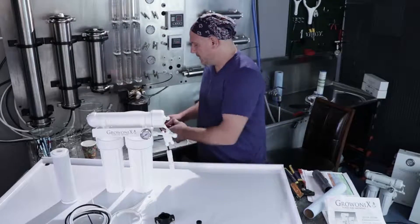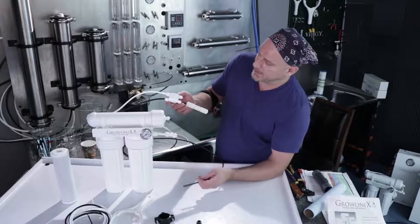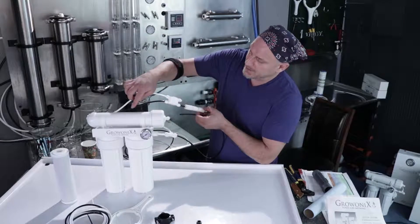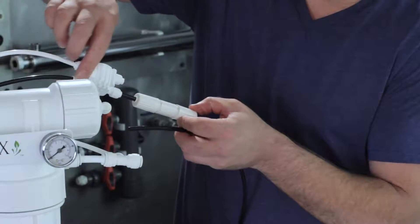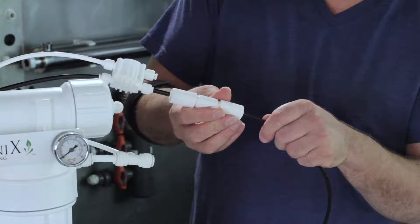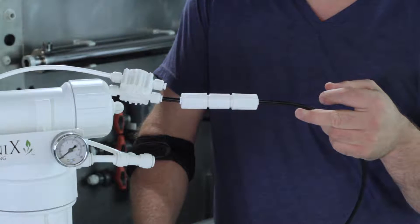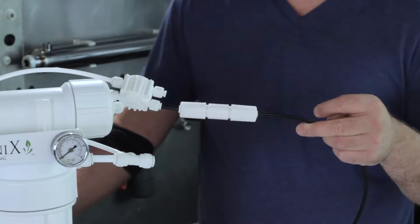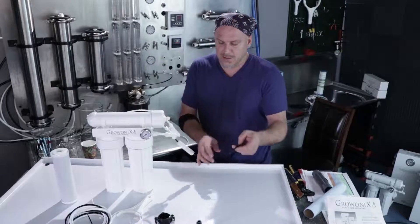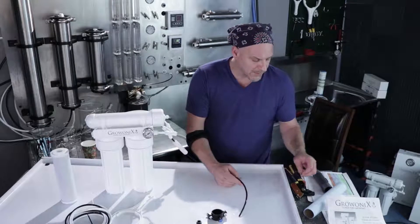The first thing I'm going to do is connect the drain line of the RO. Like all Grow Onyx units, the drain line is black. You can see it come through the auto shutoff valve through the flow restrictor. On this unit, I'm going to connect it directly to the flow restrictor. That's because there is no flush kit on this unit. The other end of the drain line is going to go into the drain clamp, and we're going to talk about connecting the drain clamp right now. It's very simple.